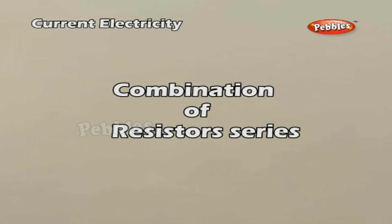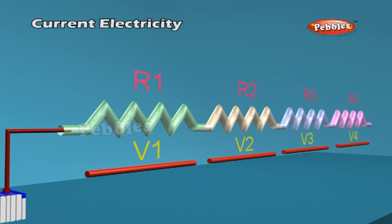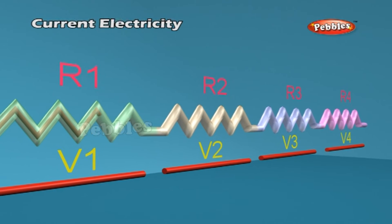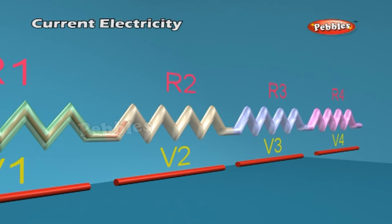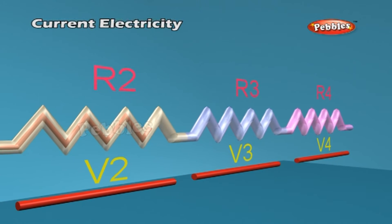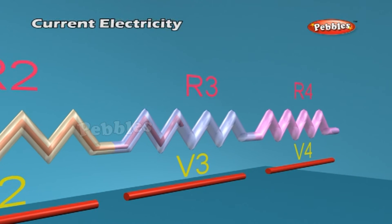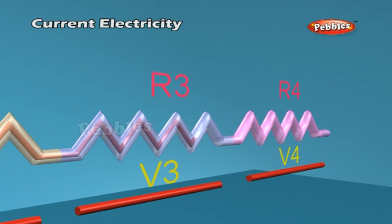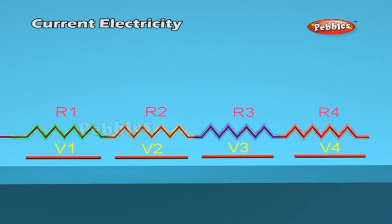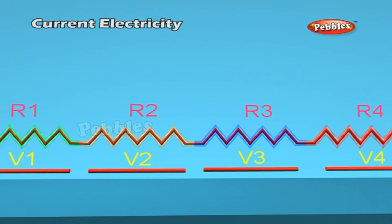Combination of Resistors — Series: When the negative pole of the first cell is connected to the positive pole of the second cell, the negative pole of the second to the positive pole of the third, and so on, with the external resistance R connected in series between the positive pole of the first cell and the negative pole of the last cell, this is called a series combination. For simplicity, all cells are considered identical, each having EMF epsilon and internal resistance r.